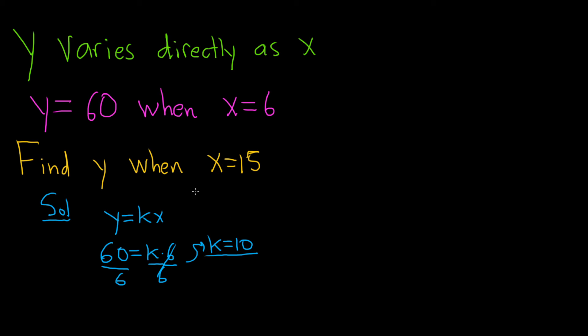We have k equals 10, since 60 over 6 is 10. Now we can plug the 10 back into our formula: y equals 10x. Recap: the first sentence gives you the formula, the second piece gives you k, and the third piece gives you the answer.